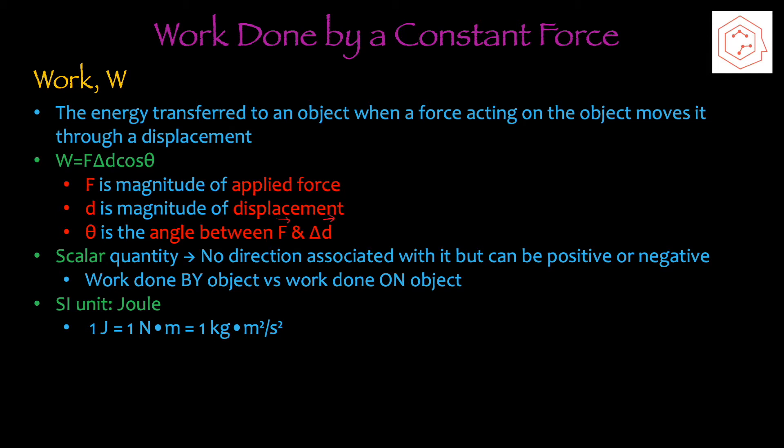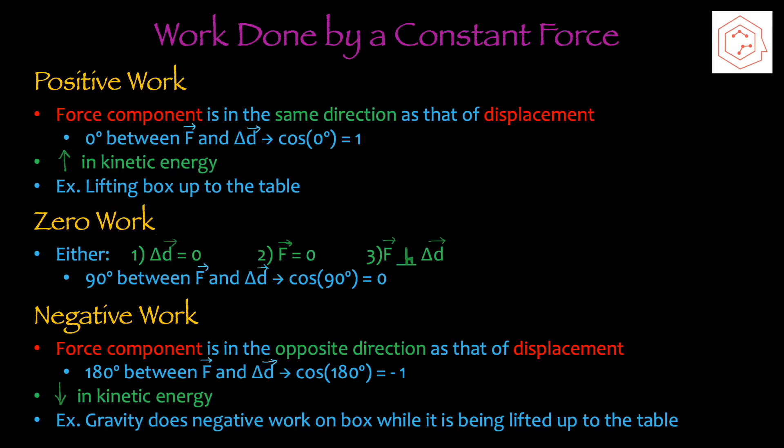Work is a scalar quantity, which means there's no direction associated with it. However, work can be positive or negative, depending on whether work is done by the object or on the object. The SI unit for work is joule, so 1 joule is equal to 1 newton times meters, which is also equal to 1 kilogram times meters squared per second squared.